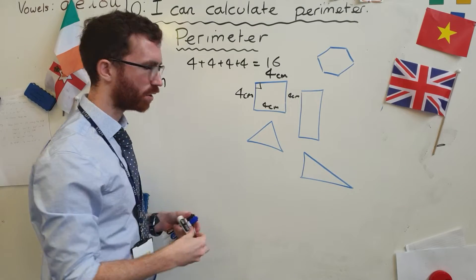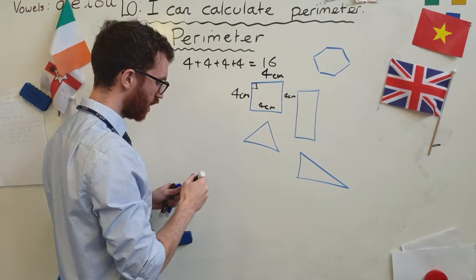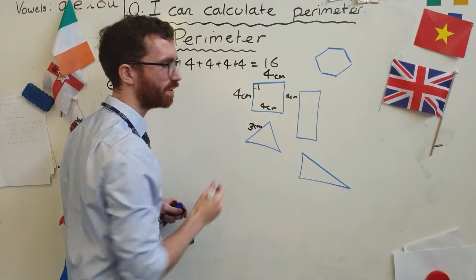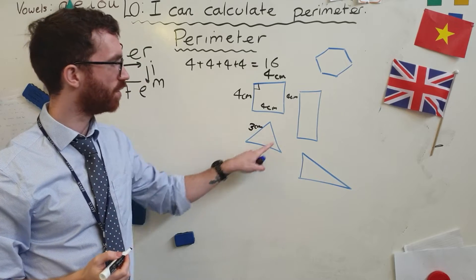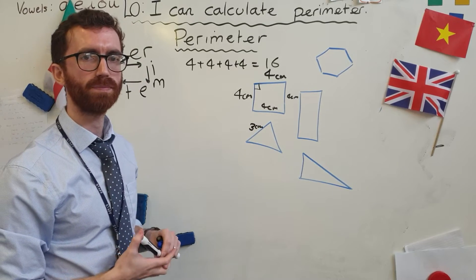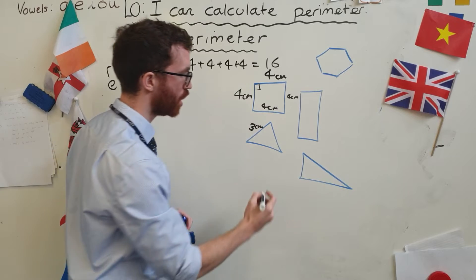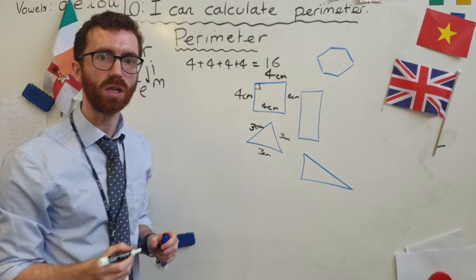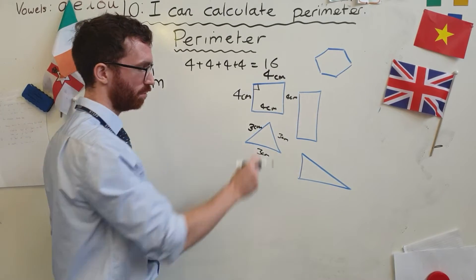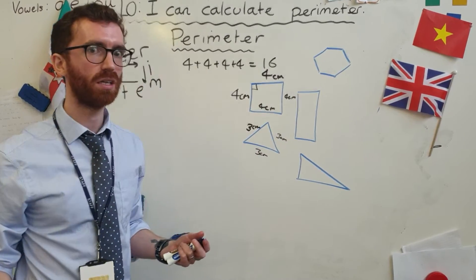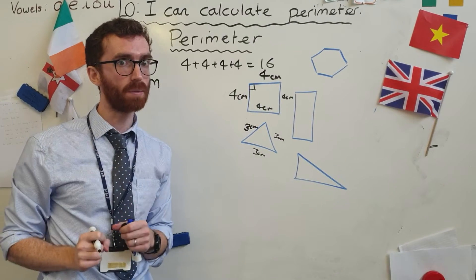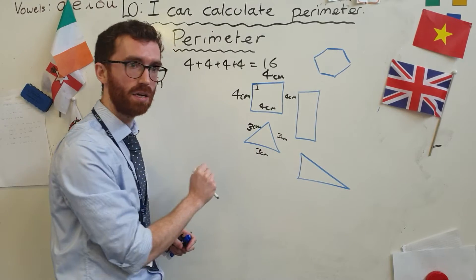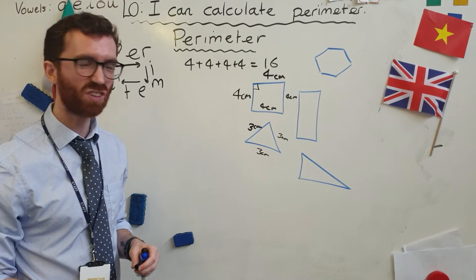This is an equilateral triangle. If this is an equilateral triangle and this side is three centimetres, what are the other two sides? If it's equilateral, they must all be the same — the clue is in the word equilateral: they are equal, each side. So the perimeter of this shape must be nine centimetres: three, six, nine — just adding them together. It's as simple as that.